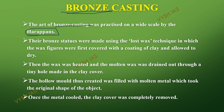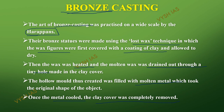The Harappans are the people from the sites where Indus Valley excavations were found. The lost wax technique works as follows: first, a wax statue of the desired shape is made. Then the wax is heated and drained out, and in that tiny hole the molten metal is poured. The clay cover is then completely removed. This technique is called the lost wax technique.